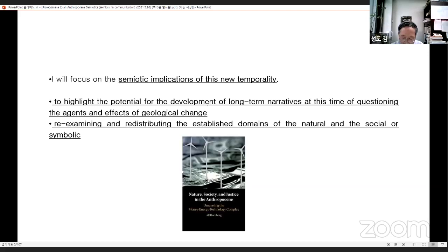Continuing from these first issues, a more difficult analytical, epistemological, and methodological task would consist of re-examining and re-distributing the established domains of the natural, the social, or the symbolic. Insofar as neither nature nor society remains intact in the Anthropocene, it is hardly viable to maintain the division between the cultural sciences and those of nature.